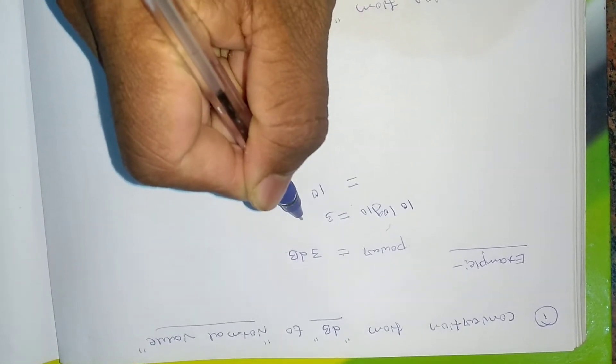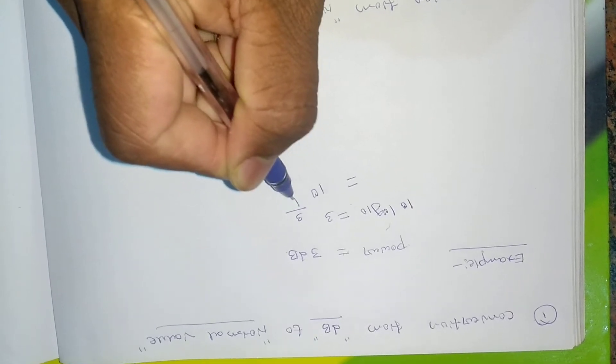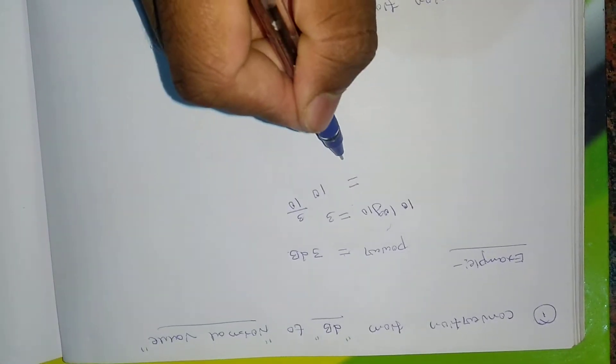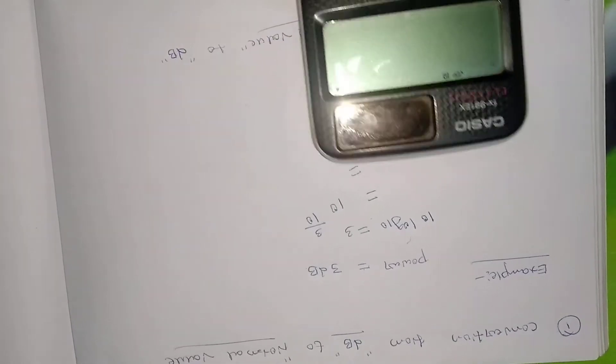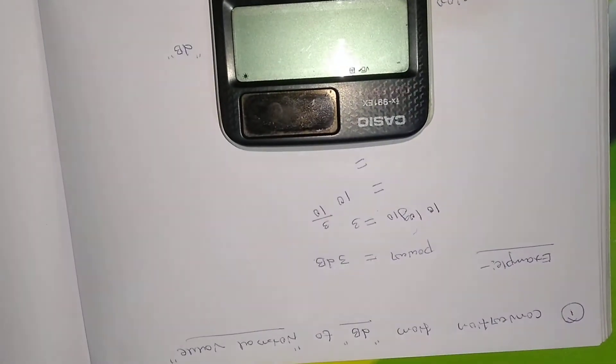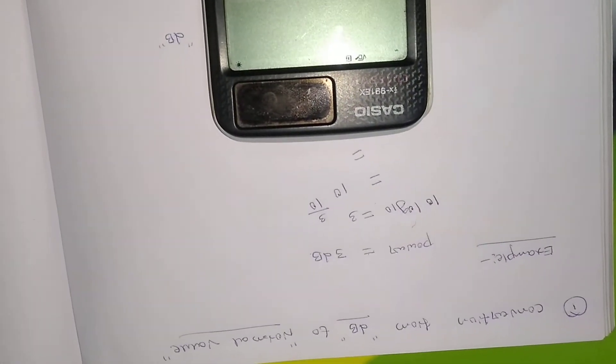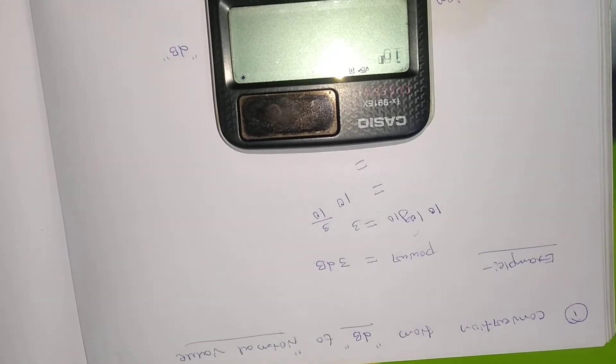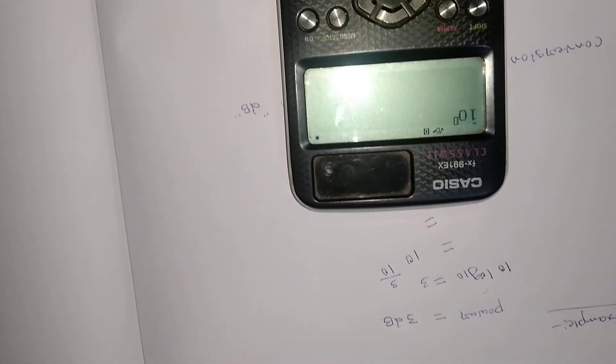So we need to write like this. Then after this, what I will be getting is something like this. Okay, so 10 to the power, hope you are able to see.